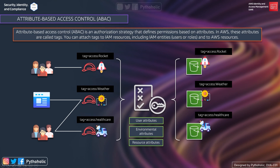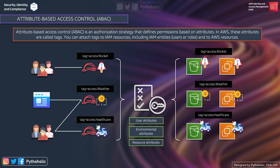Now, if our application is evolving and wants to use EC2, we can just add the new resource with the same resource tag — rocket, weather, or healthcare — and the resources will be coupled with the access tags, allowing users to use the same tags to access them. That is the beauty of attribute-based access control.